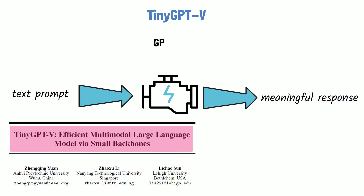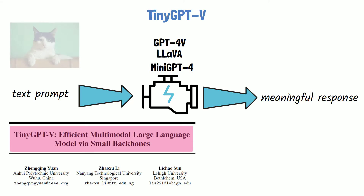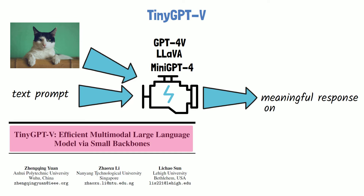With vision-language models such as the closed-source GPT-4V, where V stands for vision, and open-source LLaMA and MiniGPT-4, we can now add images to the prompt — such as a cat image — and get a meaningful response that takes both types of inputs into account.